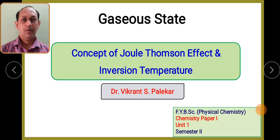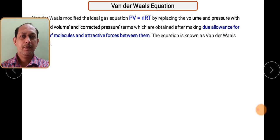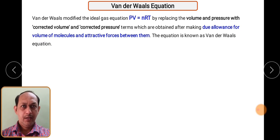As we know, the ideal gas equation is PV = nRT, but this particular equation has some limitations because it shows a very good number of deviations from actual behavior at different temperatures and pressures. Van der Waals equation gives a more satisfactory description of the behavior of all gases at different pressures and temperatures. So let us see how this particular equation is derived.